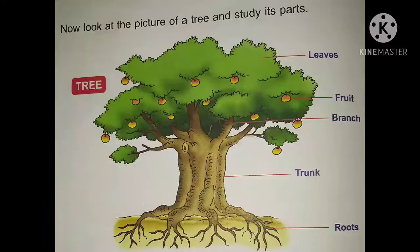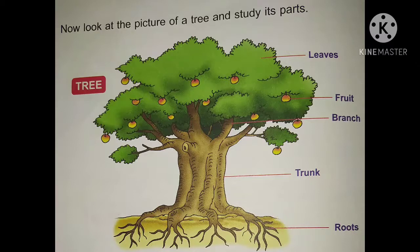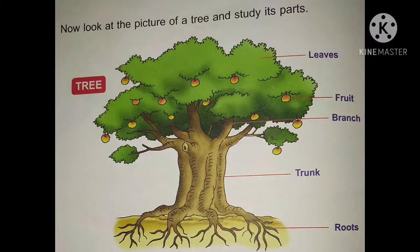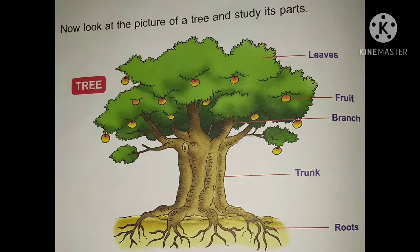Above the roots is the stem. A tree's stem is very strong and is called the trunk. After the trunk, it is divided into branches. The main parts of a tree are: roots, trunk, branches, fruit, and leaves.